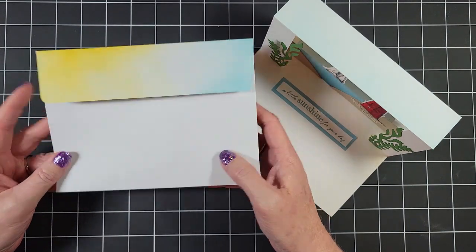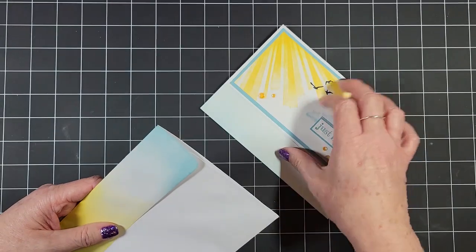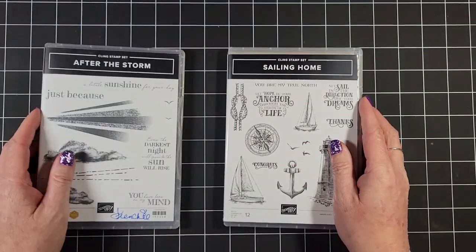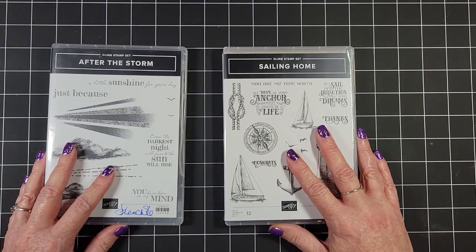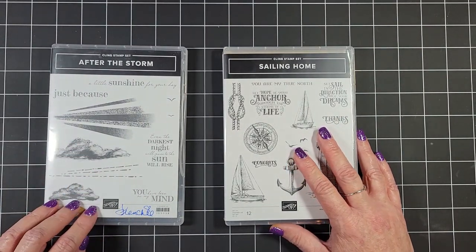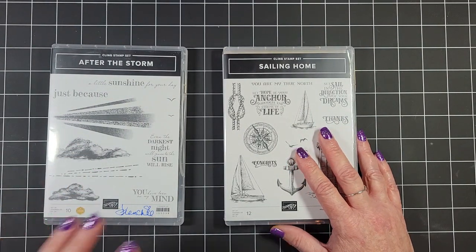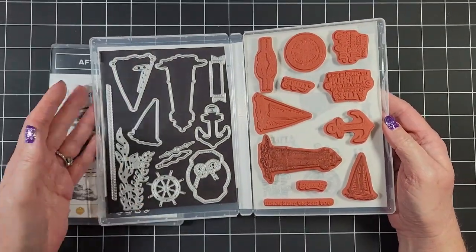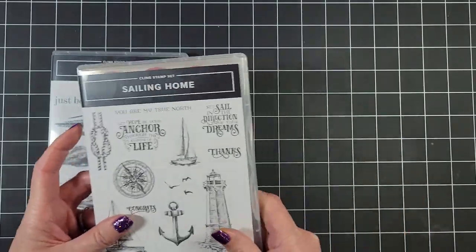And it fits into this 5x7 or A7 envelope. Stampin' Up! doesn't carry these, but I will link to the ones that I use. But really, it's an invitation envelope. Alright, so here's the two stamp sets we're using. A Perfect Storm that France designed, and we're going to be using Sailing Home as well, along with the coordinating dies for that set.